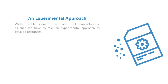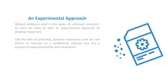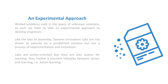Experimentation is a key aspect of the lab approach. We're not trying to execute on a predefined plan — we're trying to learn together what the solution might be, and that requires experimentation. Wicked problems exist in the space of unknown solutions, so we have to take an experimental approach. Labs are action-oriented but also spaces for learning, involving a constant interplay between action and learning — what we call action learning. They create safe-to-fail environments where we can experiment so as to learn rapidly and find solutions.